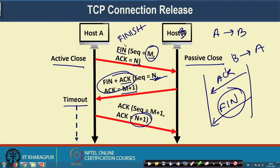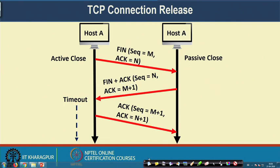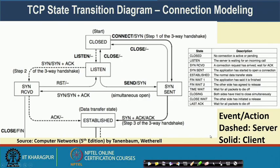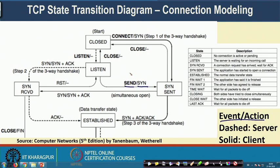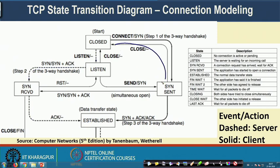As with the hypothetical transport layer protocol discussed earlier, TCP also follows a state transition diagram. The entire state transition procedure starts from the closed state, where both server and client have not started any TCP socket. The notation used is event/action pairs. The dashed line represents the server path and the solid line represents the client path. In a client-server model, the server remains in the listen state waiting for a connection request from a client.